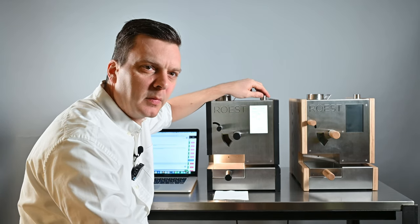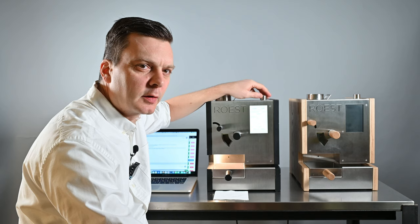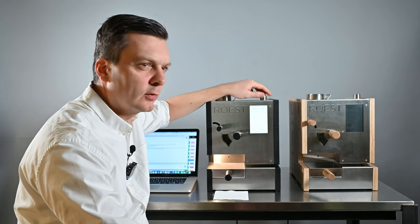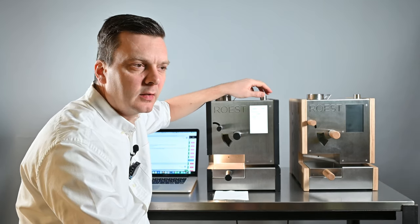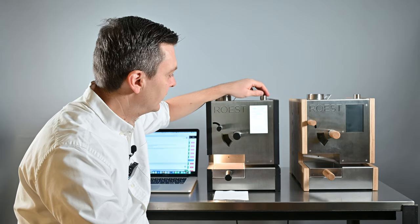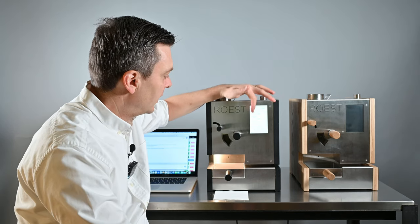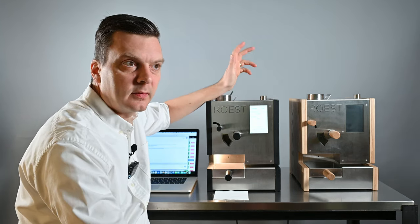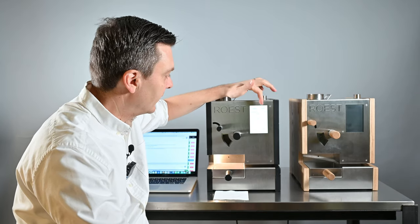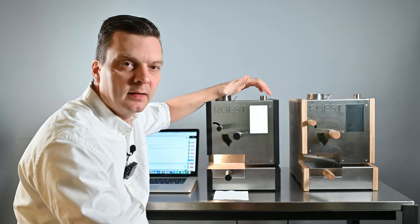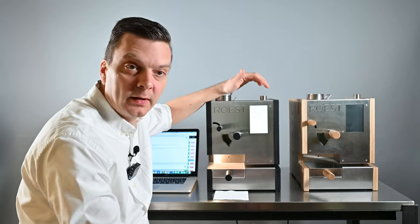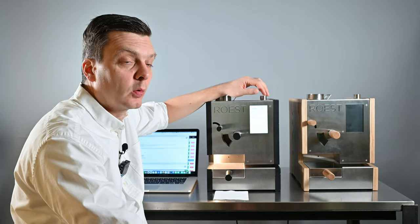So what I'll do then is just program the development time. A normal development time for my coffees, which is normally 100 gram samples, is 50 to 60 seconds. It depends a little bit on which coffee it is. So the machine will then detect after five cracks, it'll start that timer and count down 55 seconds. And once it's done, it lets the coffee out and it starts to cool the coffee, which is pretty cool.